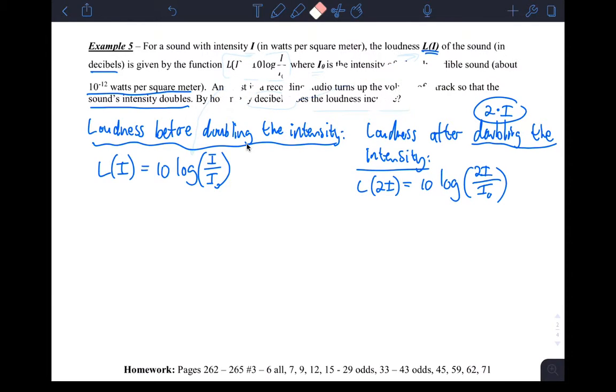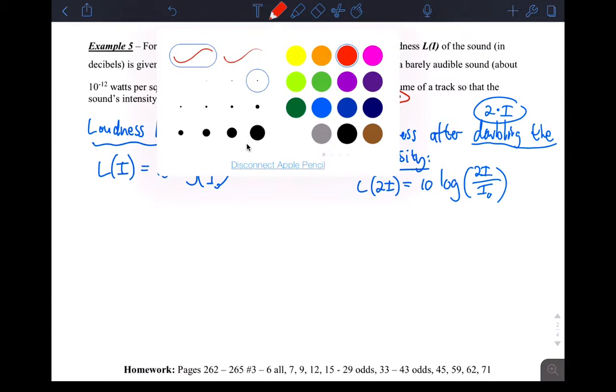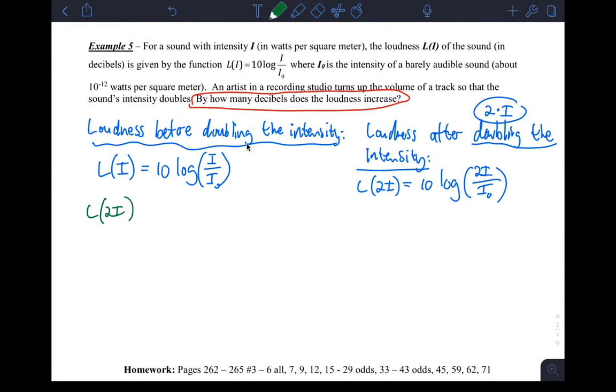So question is, let me erase some of this stuff. The question is this. How many decibels does the loudness increase by? Well, that would mean take the loudness after doubling minus the loudness before doubling. So what I'm going to be doing is this, L of two i minus L of i, and seeing how many decibels louder the sound is with twice the intensity, okay? So now all I have to do is take this and substitute. So I have 10 log base 10 of two i over i sub zero minus, and then the intensity before is 10 log base 10 of i over i sub zero.